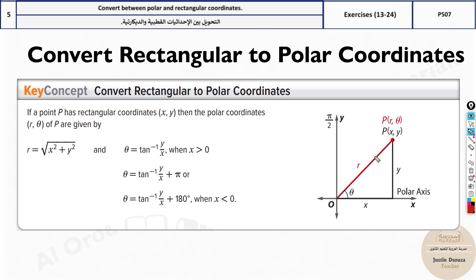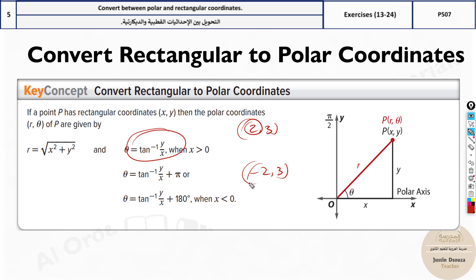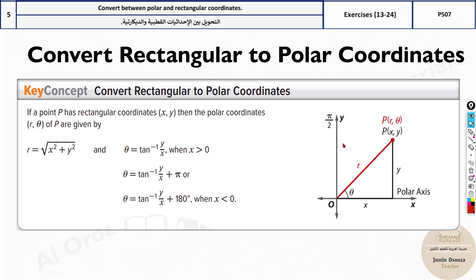We use the Pythagorean theorem to find r. For theta, we use tan inverse of y over x. This is very important: if x is positive, just use tan inverse y/x. But if x is negative — say (-2, 3) — you must add π, which is 180 degrees.